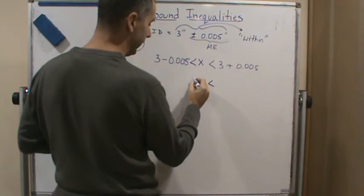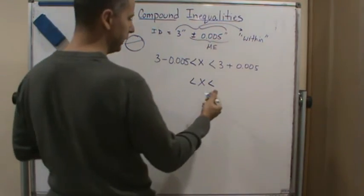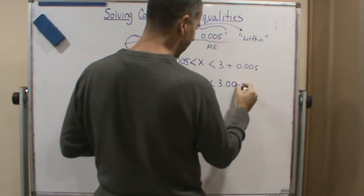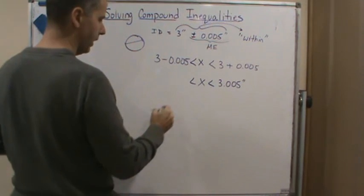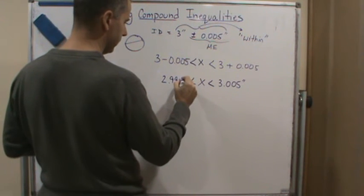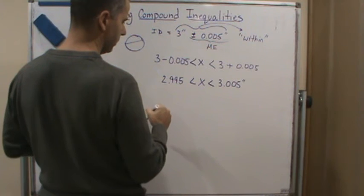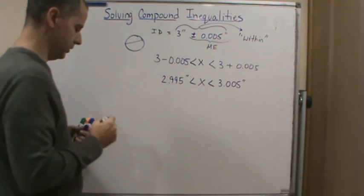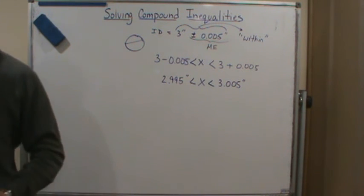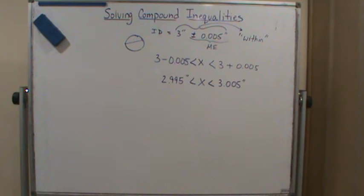So in this specific case, we're saying x is between 3.005 inches and 2.995 inches. And so that's the point. So that is what we mean by a compound inequality, and this is exactly how we solve an inequality.